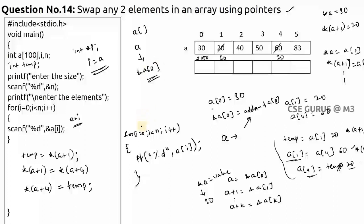One more interesting point: you can print a[i] or i[a] — both are equal. For example, if you print a[2] you get 40, and if you print 2[a] you also get 40. This notation is also acceptable in C.